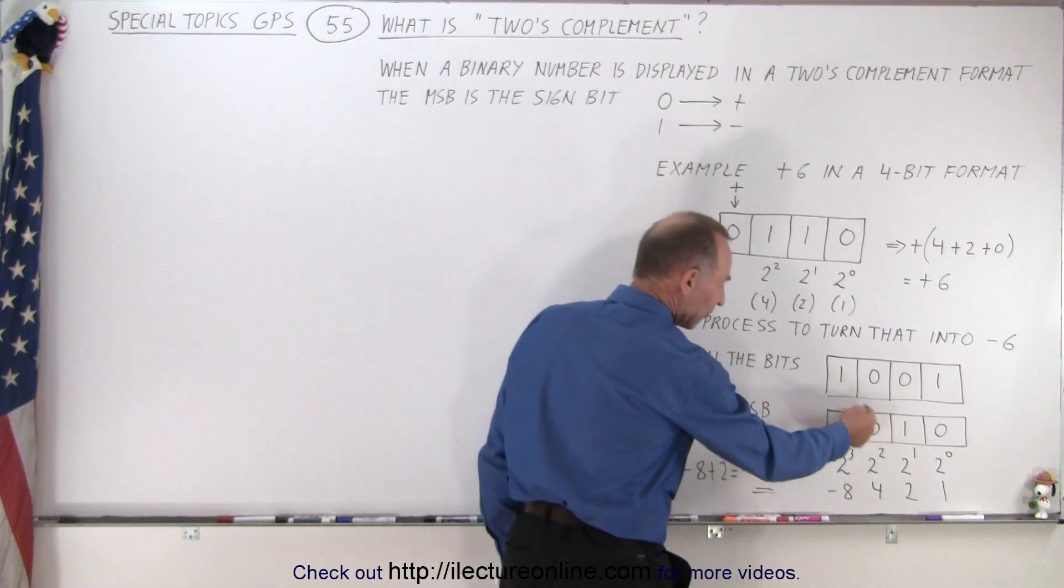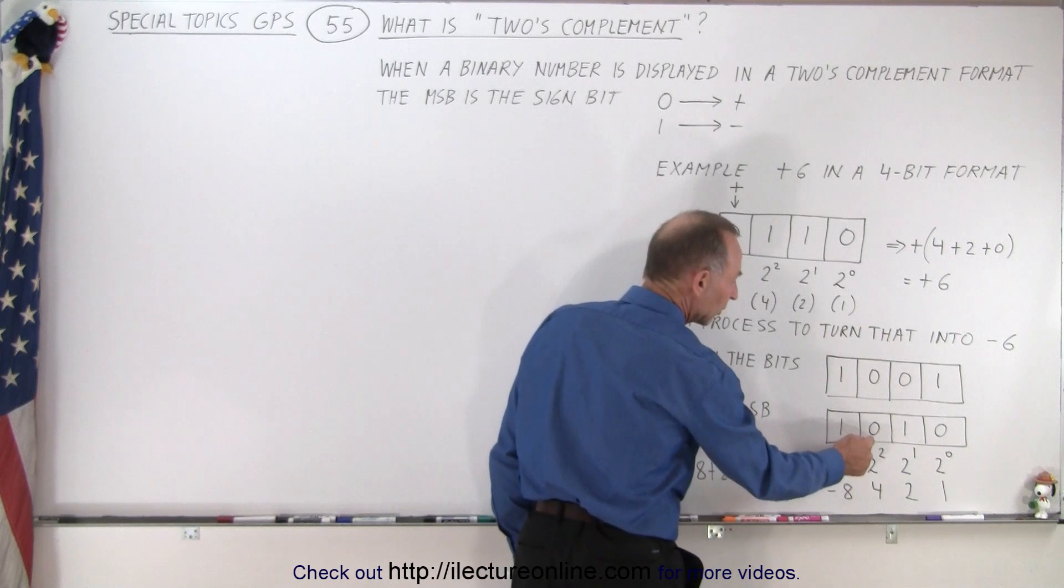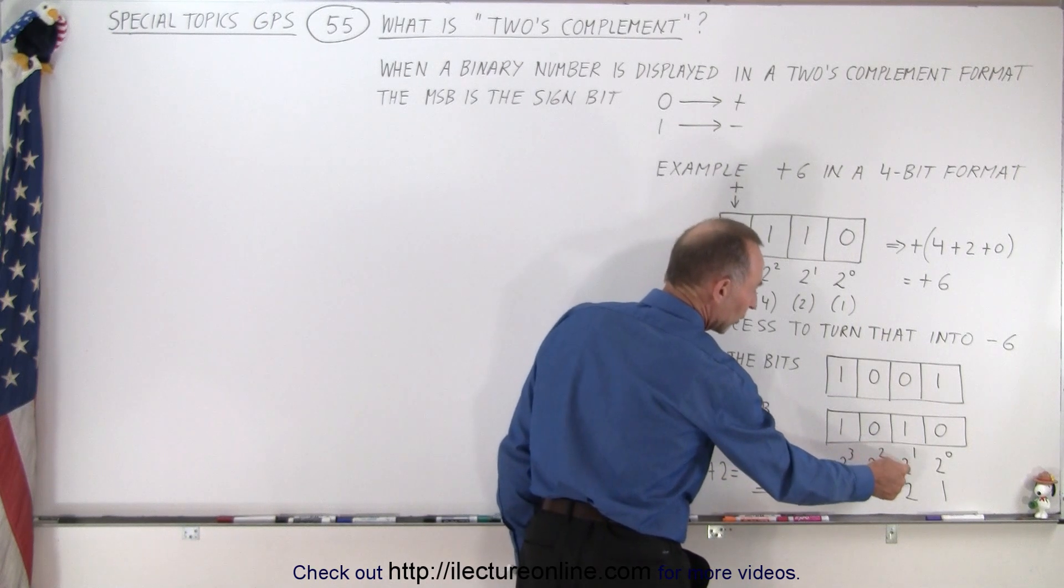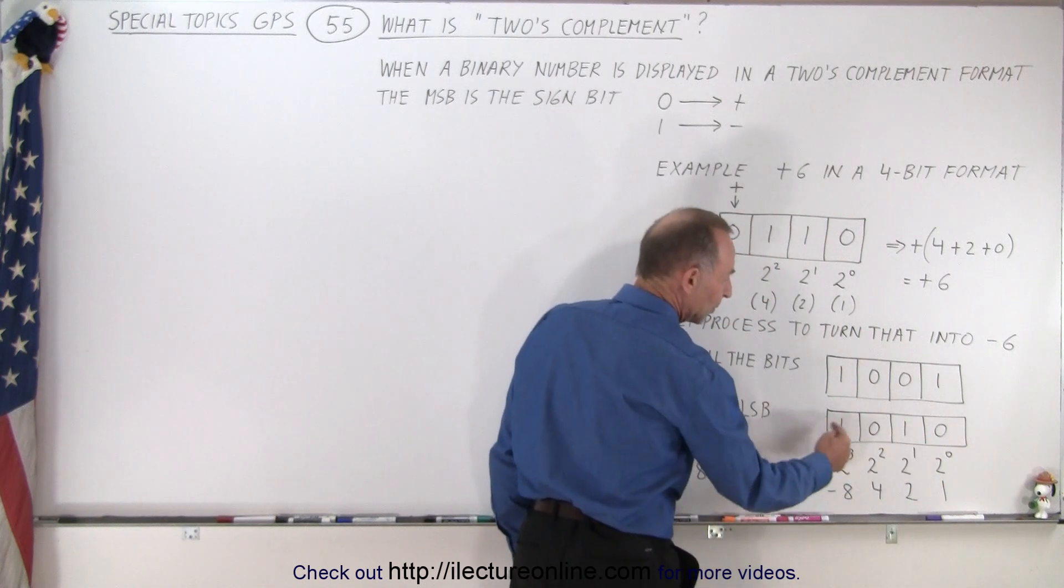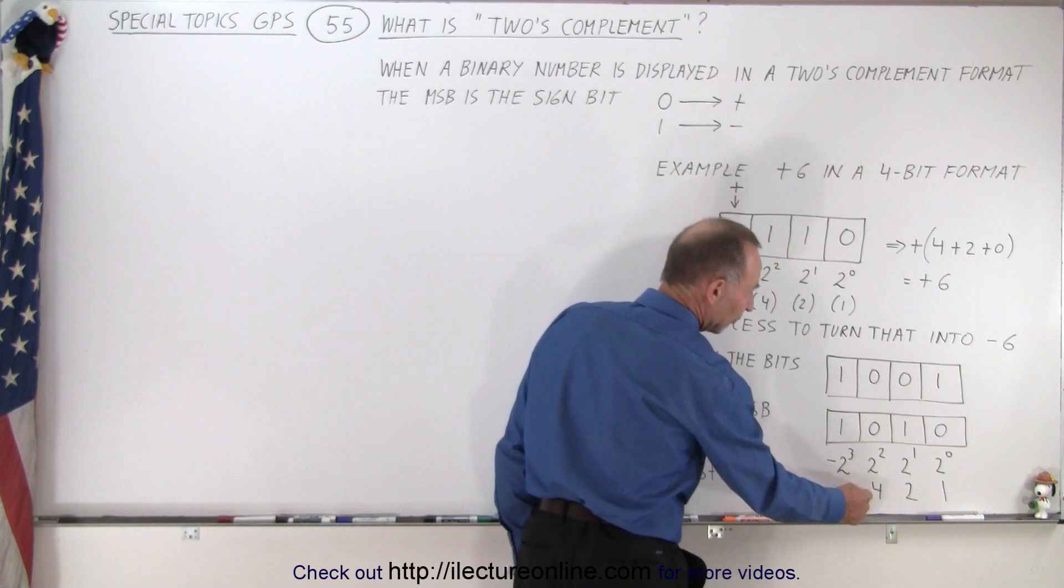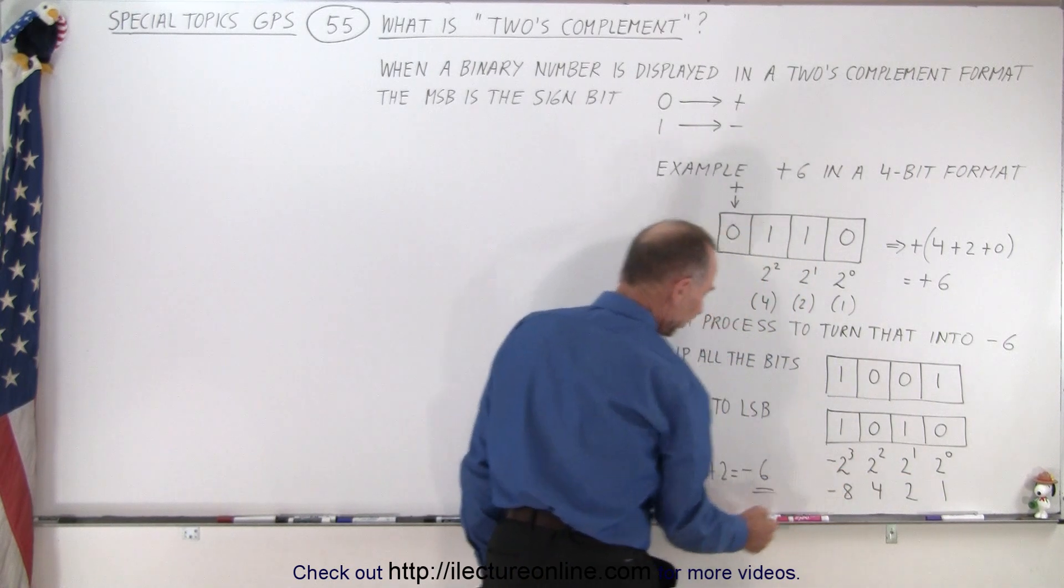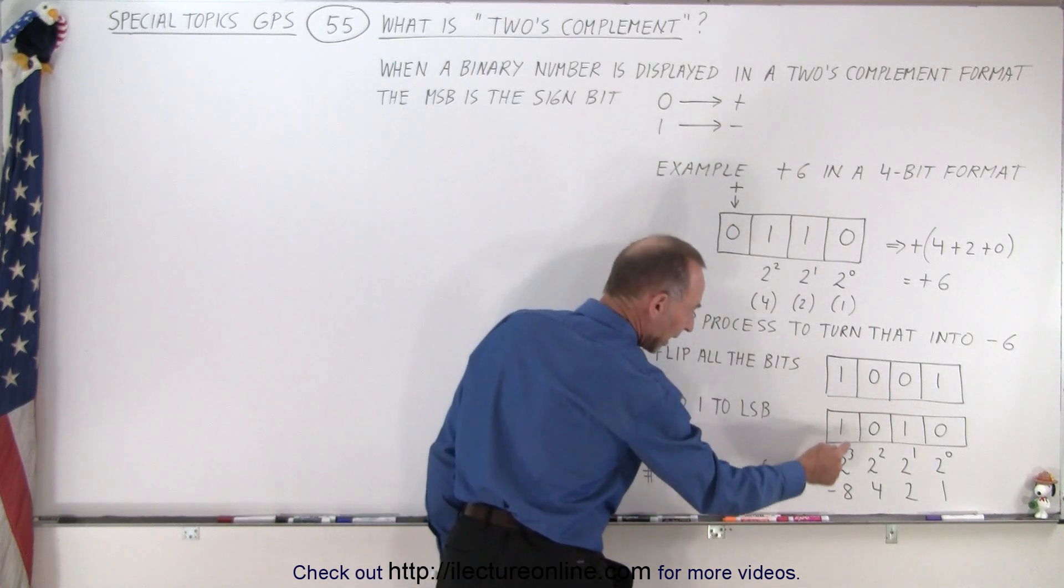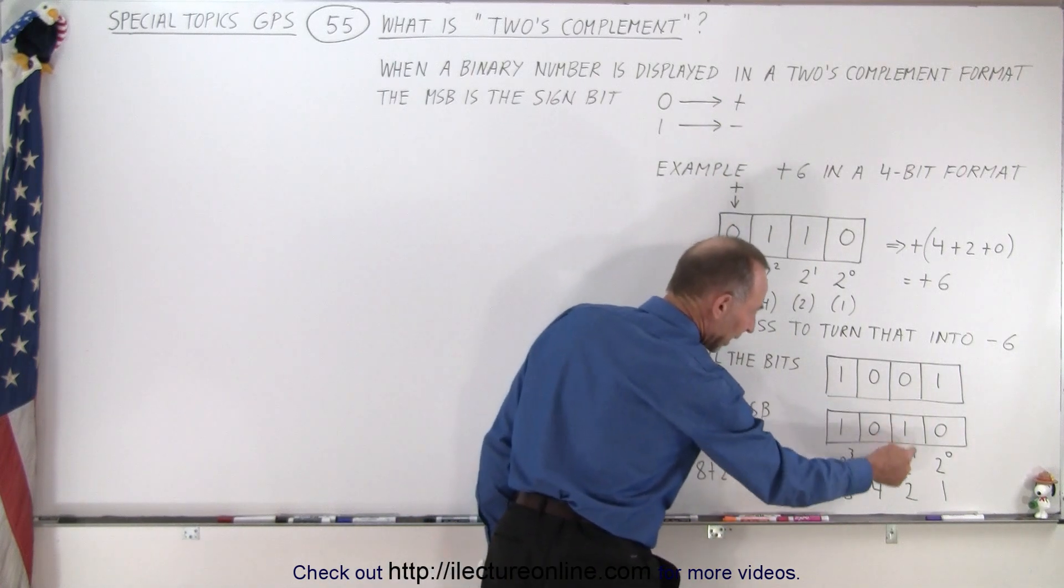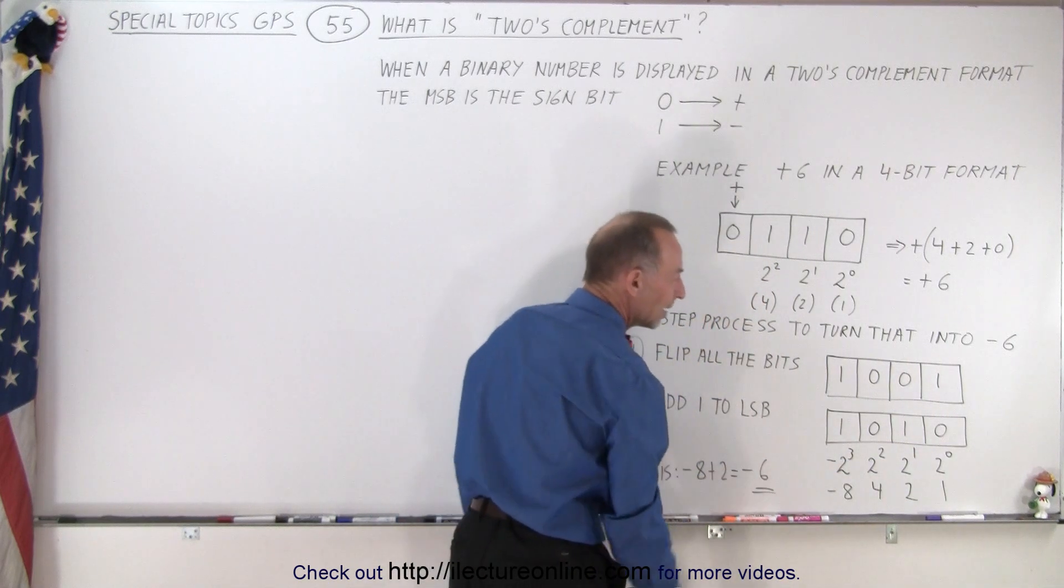Then, realizing that the first bit now represents the negative of 2 to the third power. The second bit is 2 to the second, the third bit is 2 to the first, and the fourth bit is 2 to the 0. So this means that this can be a negative 8, a 4, a 2, and a 1. But then we multiply this bit times this value. So now to get the value for the number, we get 1 times negative 8 plus 1 times 2. That means negative 8 plus 2 gives us, indeed, a negative 6,